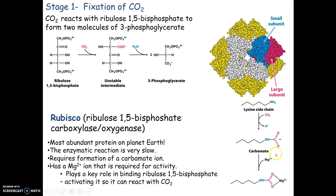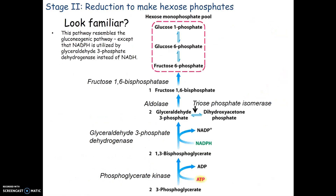This all occurs using the most prevalent enzyme on planet Earth — we refer to this as RuBisCO, which is the abbreviation for ribulose 1,5-bisphosphate carboxylase oxygenase. We have to make a carbamate ion, which helps to activate our ribulose 1,5-bisphosphate to react with CO2.